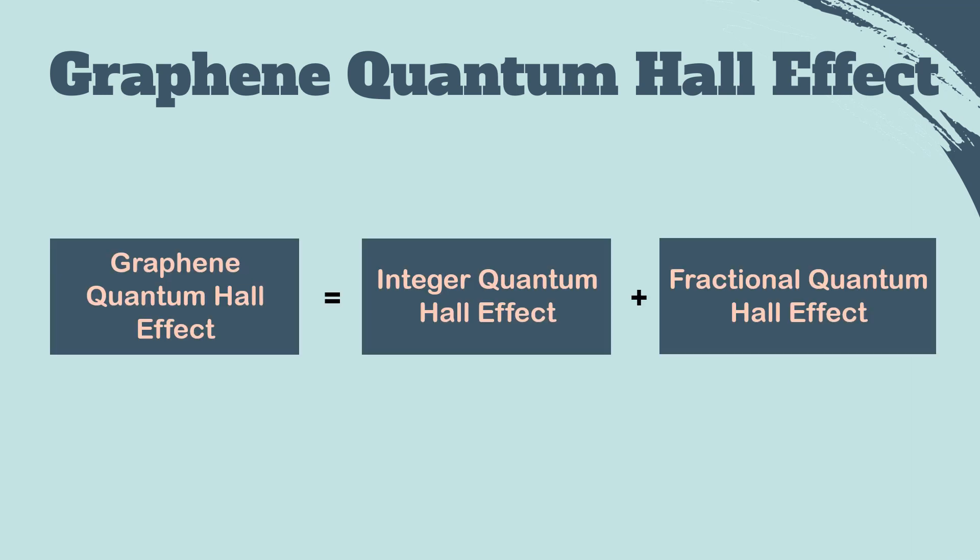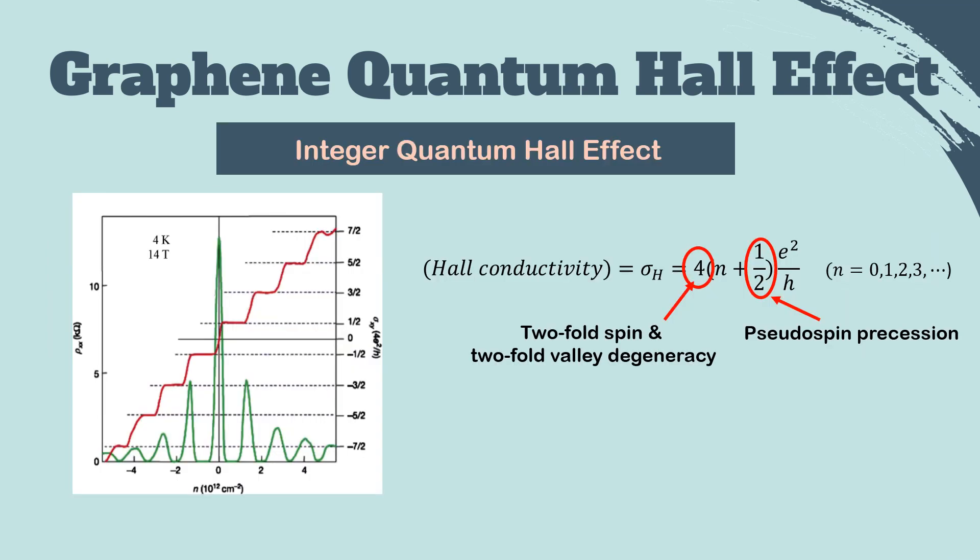Interestingly, both integer and fractional quantum Hall effects happen when the magnetic field is applied to graphene. Then, let's take a look at the integer quantum Hall effect first.